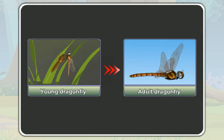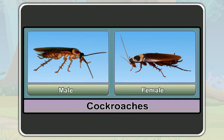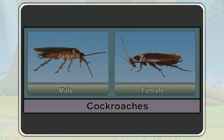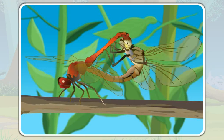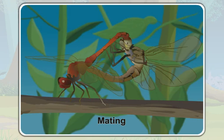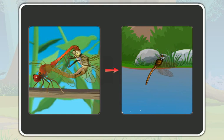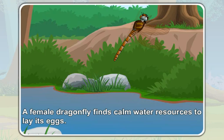You all know that cockroaches have male and female. Like cockroaches, dragonflies too have male and female. A male dragonfly and a female dragonfly meet together for reproduction, which is also called mating. After mating, a female dragonfly can lay eggs. A female dragonfly finds calm water resources to lay its eggs.